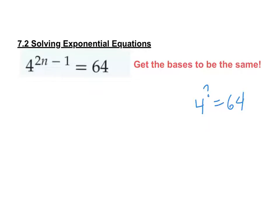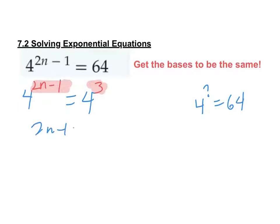That is correct. So what we do is leave this part the same, and then we rewrite 64 as 4 to the third. Here's what this means: if 4 to the (2n minus 1) equals 4 to the third, then 2n minus 1 has to equal 3. So that's essentially the equation we're going to solve: 2n minus 1 equals 3.